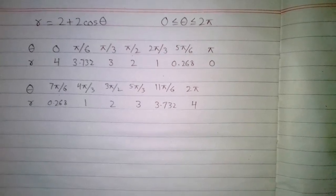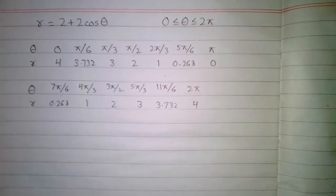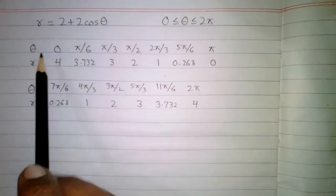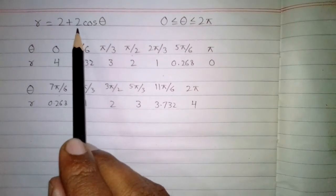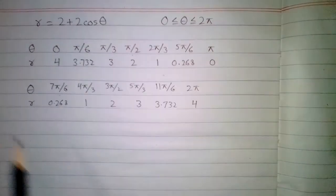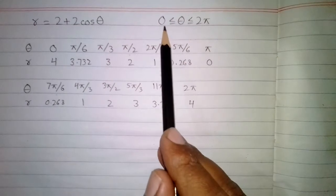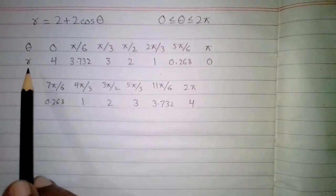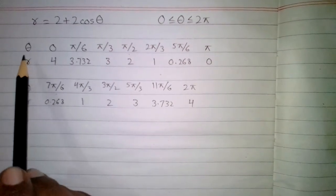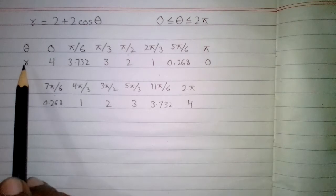In this video we are going to draw a cardioid. The equation of the cardioid is r equals 2 plus 2 cos theta, and theta ranges from 0 to 2 pi. We can find the values of r by putting in the values of theta.